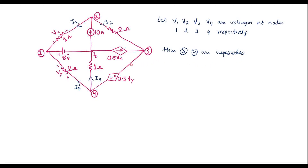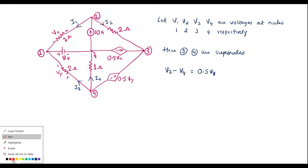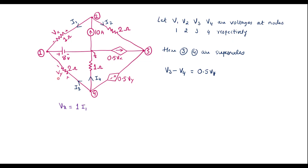Let me analyze the supernodes. Here the positive terminal is connected to node 3 and the negative is connected to node 4. So we write V3 minus V4 is equal to 0.5 Vy. Here, Vx is the voltage across the 1 ohm resistor, that is Vx = 1 × I1 = I1. Similarly, Vy is the voltage across the 2 ohm resistor — current I3 is flowing through it, so Vy = 2 × I3.